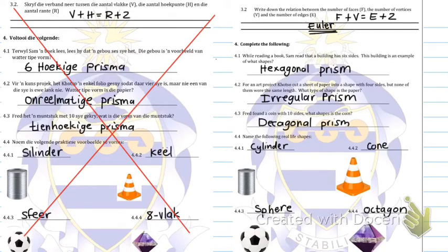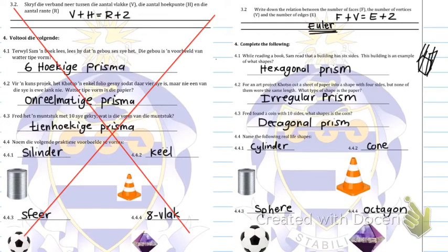Then: while reading a book, Sam read that a building has six sides — what shape is this building? If a building has six sides — one, two, three, four, five, six — and then it goes up, excuse my drawing, I think it's a hexagonal prism.